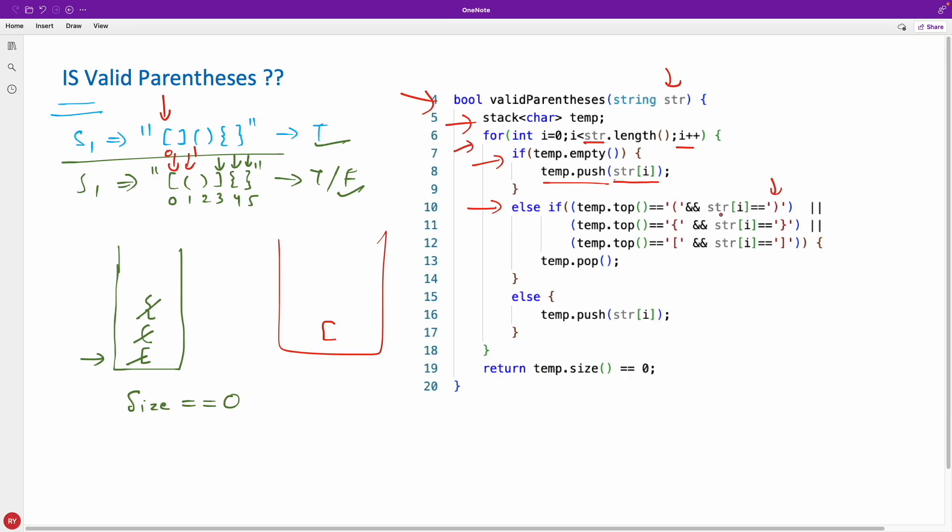If that is true then we'll just pop the stack, right? That's what I was doing here. We'll not do anything, we'll just go back and increment i and go for another character. And if neither of these conditions are true then we will just push that into the stack.